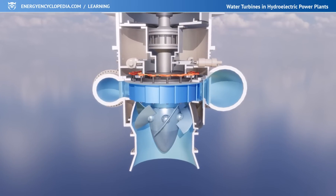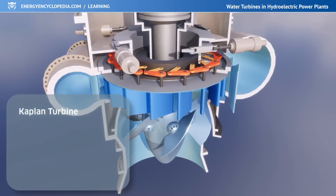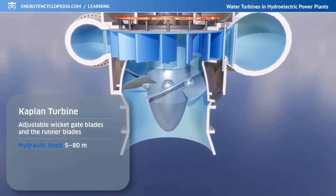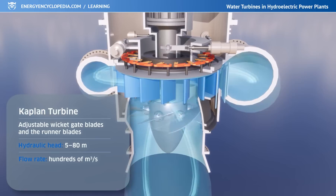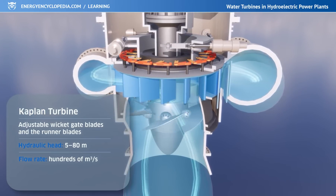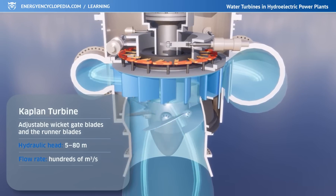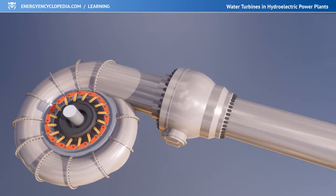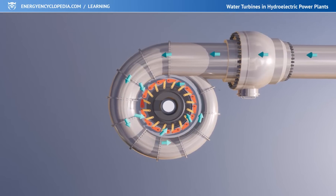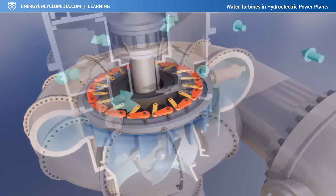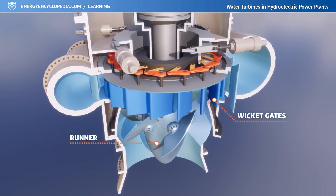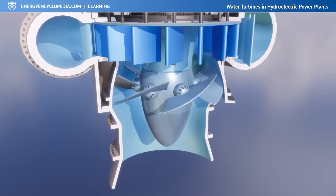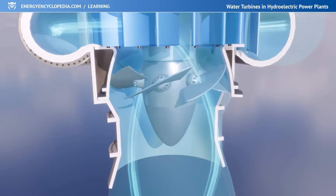One of the most frequently used water turbines in the world is the Kaplan turbine. It is a reaction turbine where both the wicket gate blades and the runner blades can be adjusted. Its head ranges from 5 to 80 meters and the flow rate of up to several hundred cubic meters per second. Thanks to its dual regulation, it is more complex and expensive than the Francis turbine, but it has a stable efficiency that exceeds 90% in larger machines. Water from a reservoir is conducted to the turbine via high-pressure pipes and is equally distributed along its circumference. A system of adjustable wicket gates accelerates the water and aims it at the blades of a runner, reminiscent of a ship's screw propeller. A mechanism inside the hollow shaft of the runner automatically adjusts the pitch of the runner blades, optimizing the angle of attack for various values of head and flow to maximize efficiency.